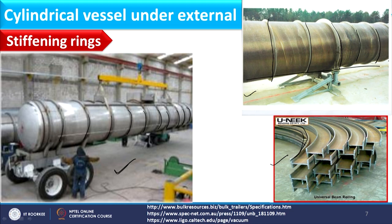Without stiffening rings, the whole length is available for external pressure to act. With rings placed, the vessel has only the length between rings as its effective length. The effective length reduces, and because external pressure acts on this smaller section, the rings provide sufficient rigidity and therefore avoid squeezing. Stiffening rings provide sufficient strength to the structure; if placed within the critical limit they will avoid failure, but if placed above the critical limit failure may occur.